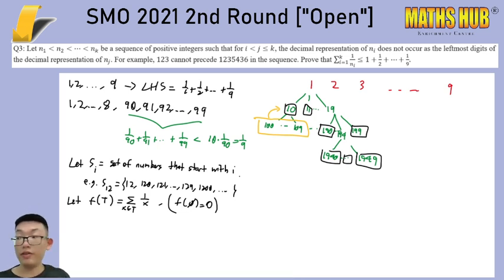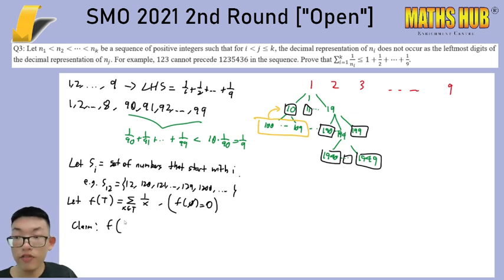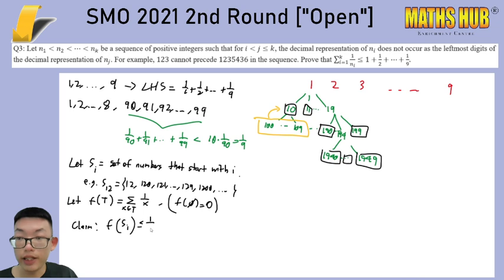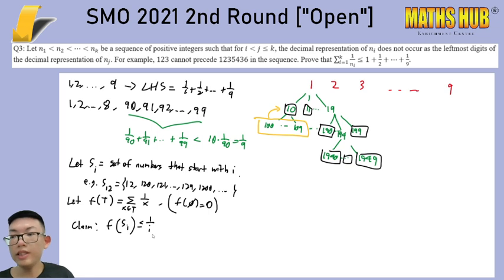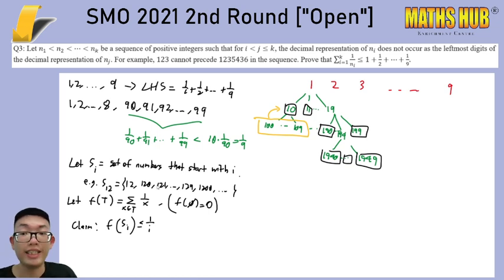So what I'm now going to claim is that f of S_i is at most 1/i. This should make some sense — I'm saying that if I want to pick from all the numbers starting with 12, the best thing I could do is just pick 12 itself, and then 1/12 is the best I can achieve.